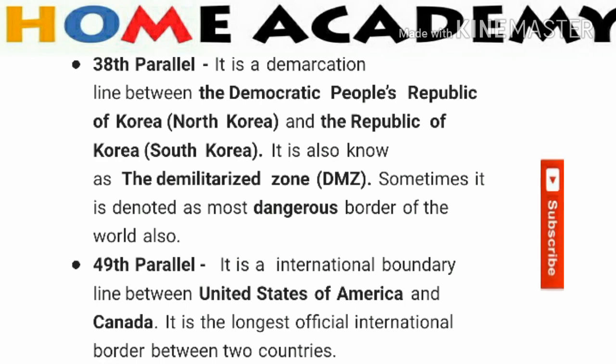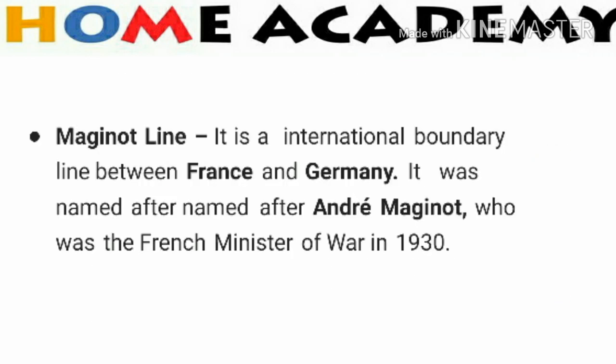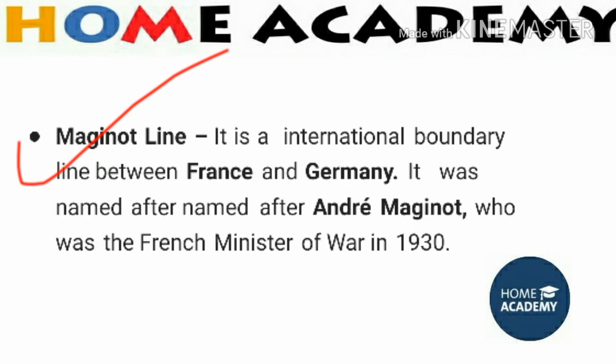The next important boundary is the Maginot Line. It is the international boundary line between France and Germany. It was named after André Maginot, who was the French Minister of War in 1930.